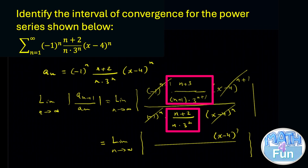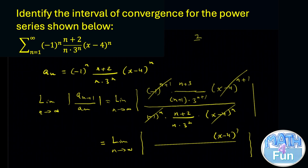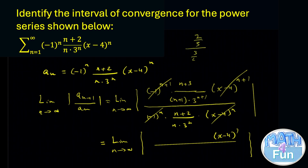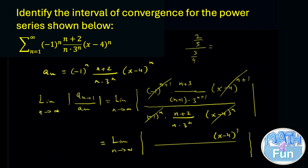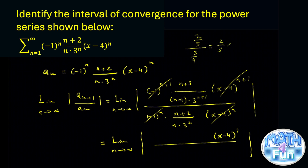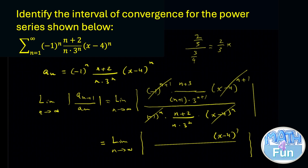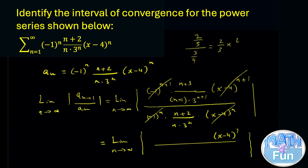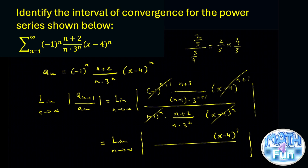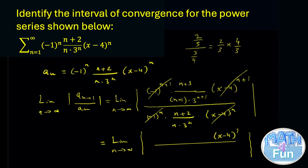Now we have a fraction over a fraction. Remember: when we have something like 2 over 3, divided by 3 over 4, you can write it as 2 over 3 multiplied by the flipped denominator fraction, which is 4 over 3.